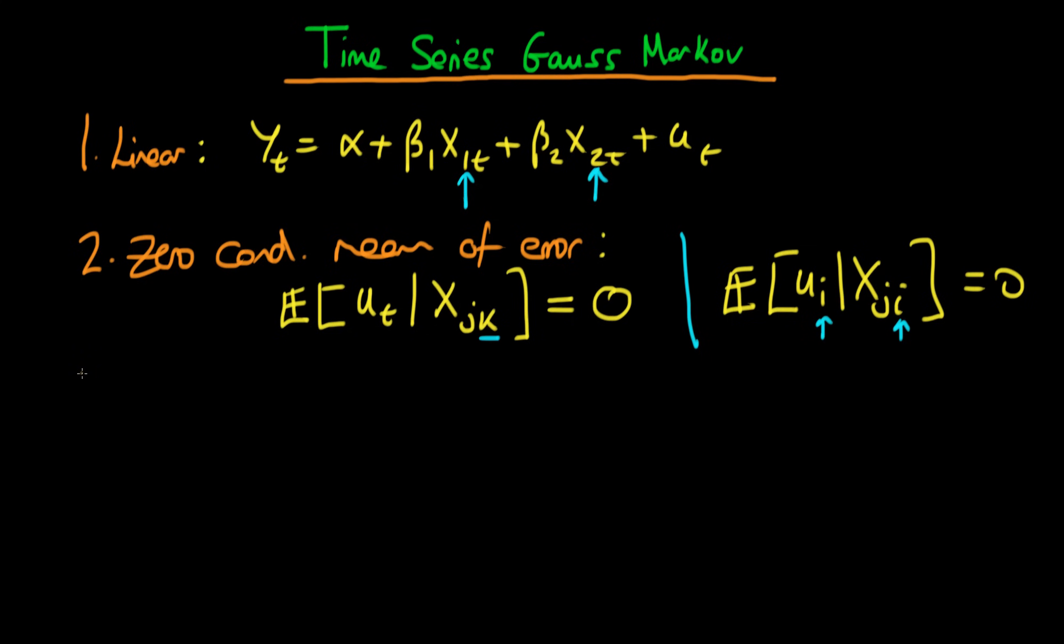The third of the Gauss-Markov conditions for time series data is exactly the same as the cross-sectional case which is that of no perfect collinearity amongst regressors. So that just means that one variable cannot be exactly determined by another variable. And if these three assumptions are upheld then OLS is unbiased.